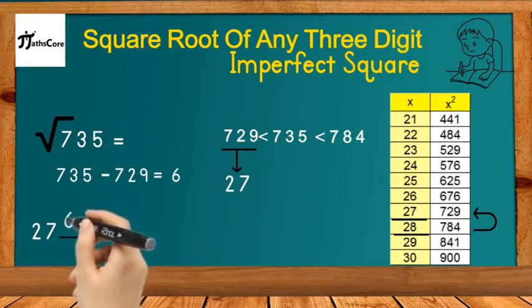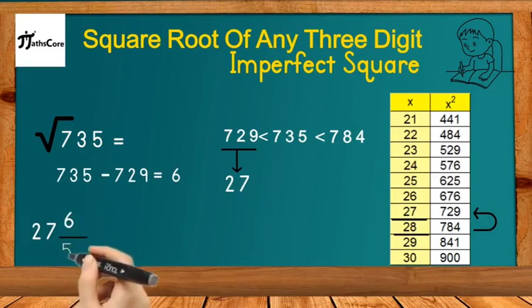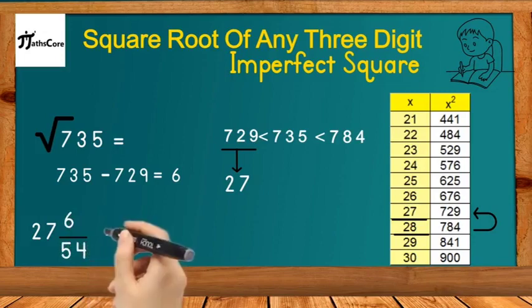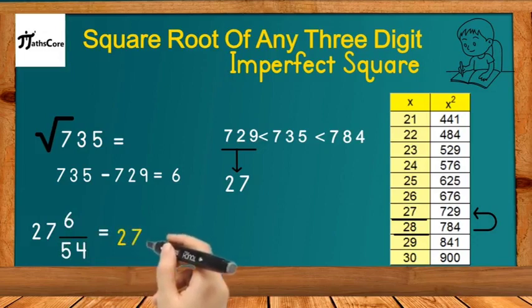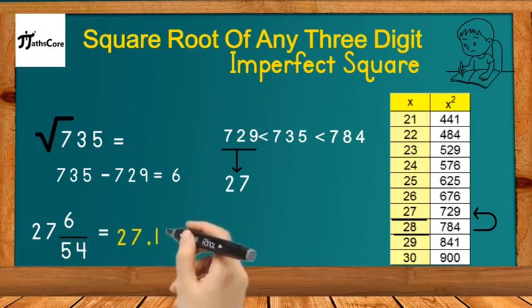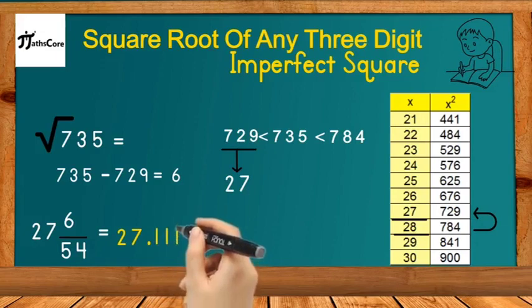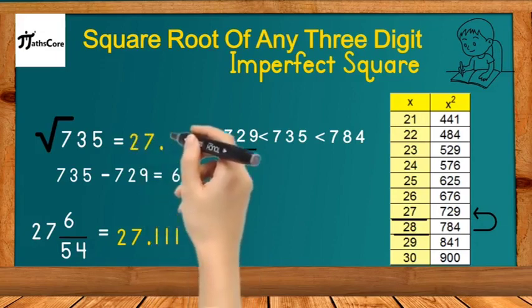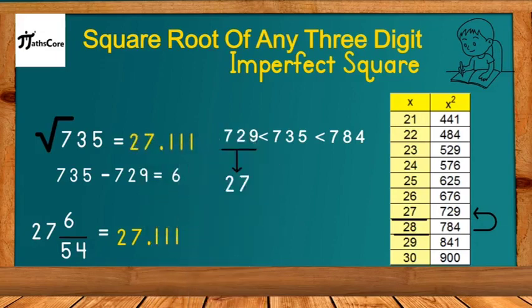We subtract 729 from 735: 735 − 729 = 6. We write down 6 and divide it by double of 27, which is 54. Simplifying this mixed fraction gives us the decimal answer 27.111. This is our final answer for the square root of the three-digit imperfect square 735. In this way, you can find the square root of any three-digit imperfect square.